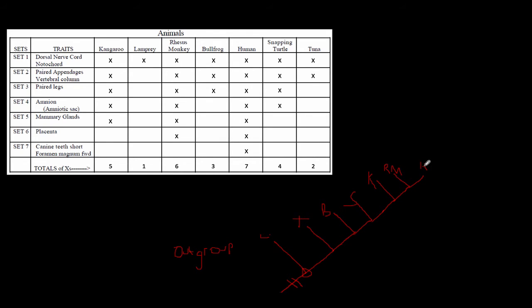So that's how you can use morphology. You start with the one that has the least number of characteristics and you just build as you go along the cladogram, doing branching events for each thing that happens. So if we go back to the traits, paired appendages and vertebral columns must have happened right here, because the tuna, snapping turtle, human, bullfrog, rhesus monkey, and kangaroo all have that - so that's when those must have evolved. And then right before the bullfrog happens, the three features it has includes paired legs, so right here is where paired legs must have evolved. You can actually see how the traits fit into the cladogram.